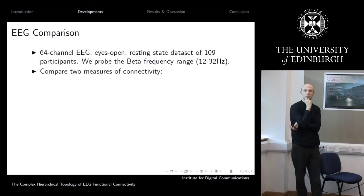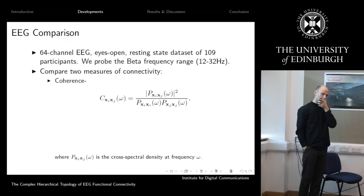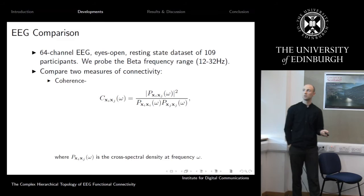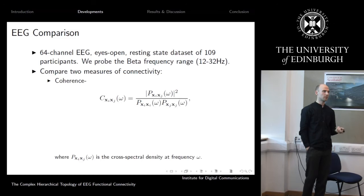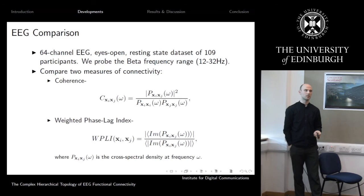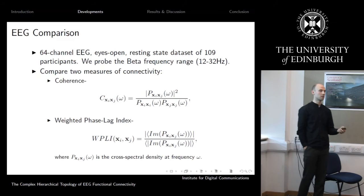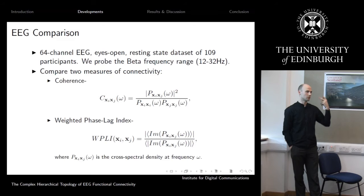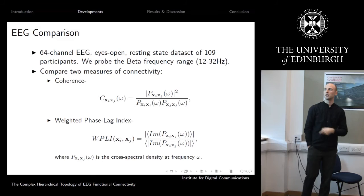We compare two connectivity measures. The first is coherence, essentially a correlation at a specific frequency, which may be biased by amplitude. The second is the weighted phase lag index (WPLI), which uses the imaginary part of the cross-spectral density to minimize amplitude influence. This addresses volume conduction, where two electrodes close together pick up the same activity — the WPLI is designed to reduce that effect.